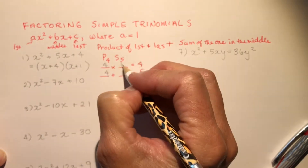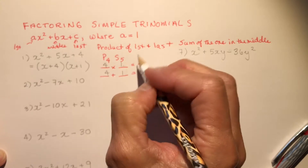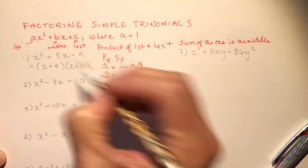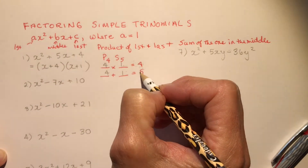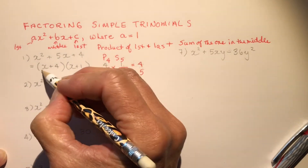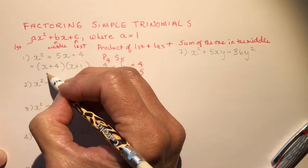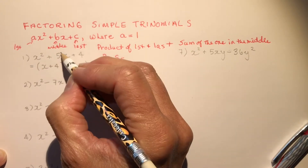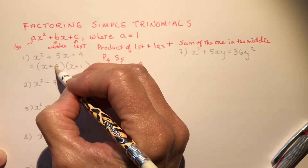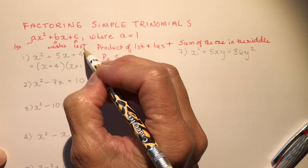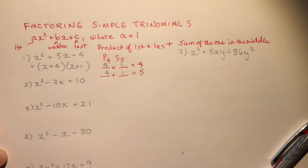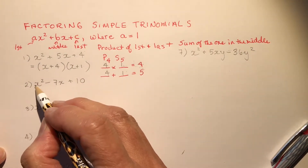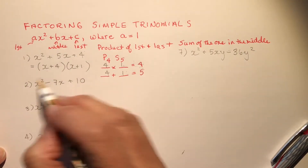So we get (x + 4)(x + 1). I can double-check it: x² + 1x + 4x = 5x, and 4 times 1 is 4. Product of the first and the last, sum of the one in the middle. Now let's go to the second example — product of the first and the last is 1 times 10, so I'm looking for a product of 10 and a sum of negative 7.